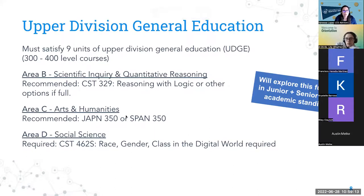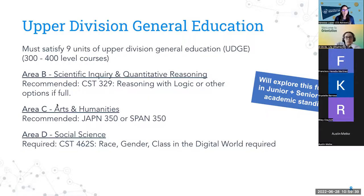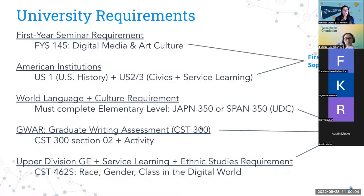There are also upper division general education requirements — areas B, C, and D — that students complete as juniors or seniors, after finishing areas A through F. We have course recommendations to complete those areas. Area C is particularly notable because Japanese 350 and Spanish 350 are recommended, as they satisfy both area C and the language requirement.